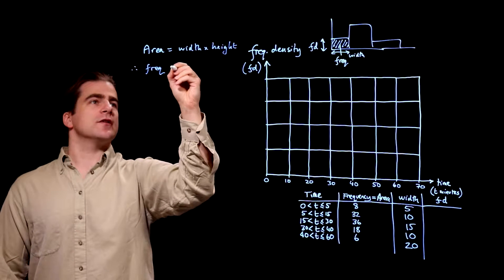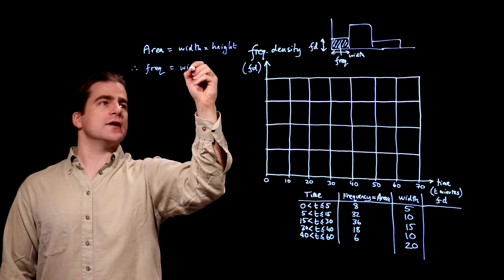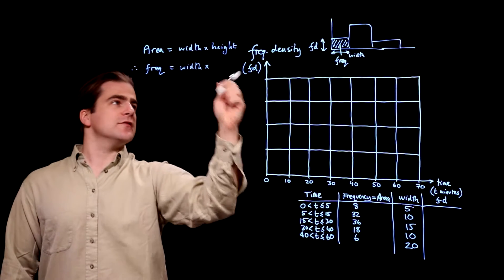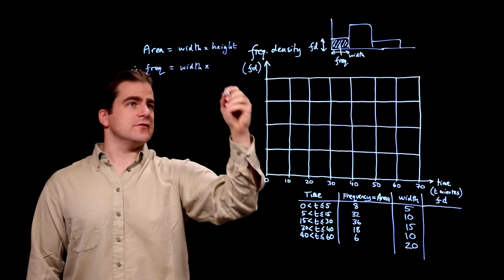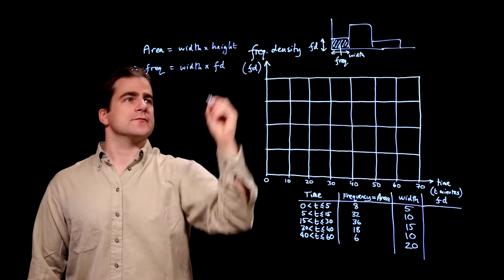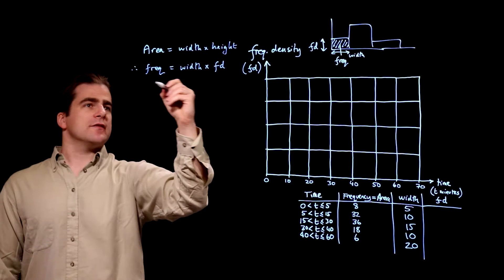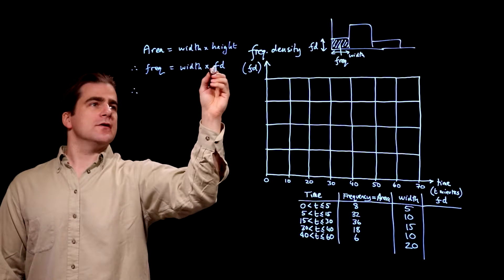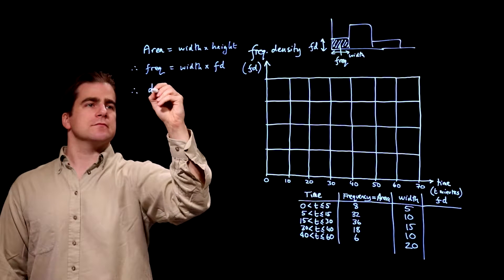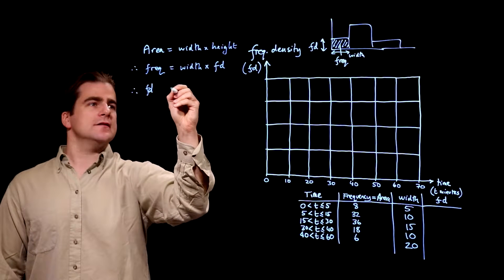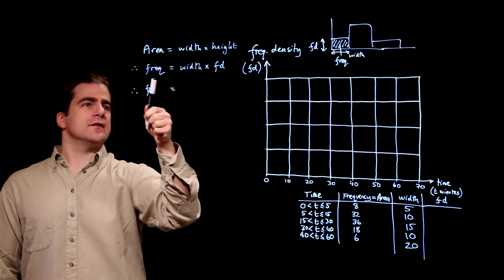Therefore, frequency is the width times the height, the frequency density. So, bring the width over here. Therefore, frequency density is frequency divided by width.